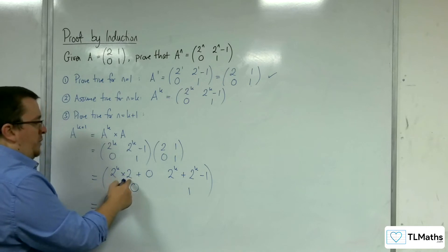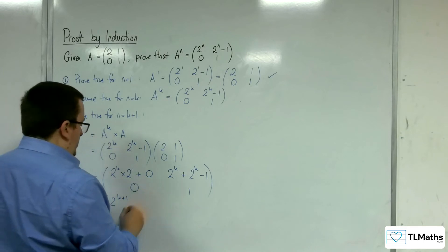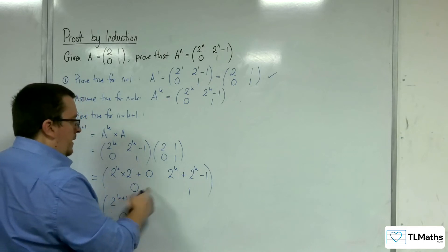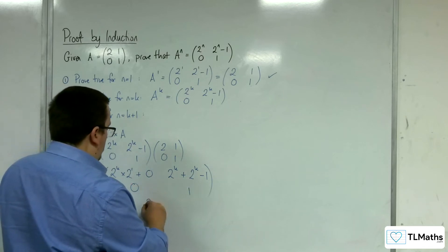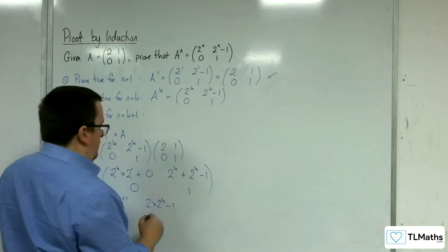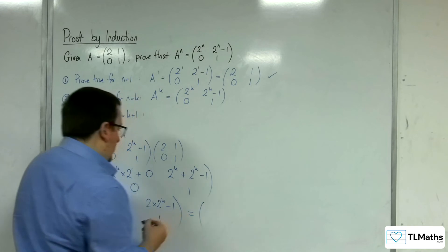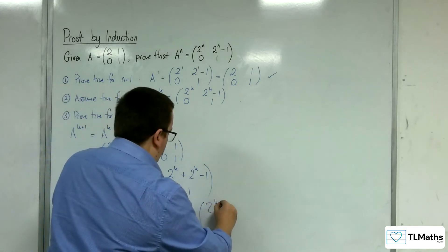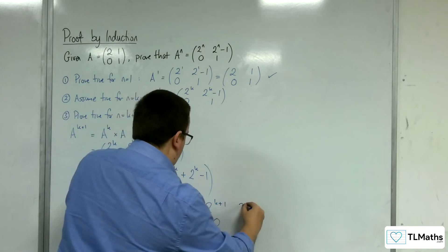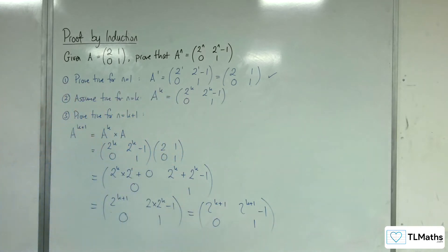Here we've got 2^k times 2^1, which is 2^(k+1). We've got 0 there. We've got 2^k plus 2^k, which is 2 times 2^k. That equals 2^(k+1) minus 1. And we've got 1 there. So 2 times 2^k is 2^1 times 2^k, which is 2^(k+1).